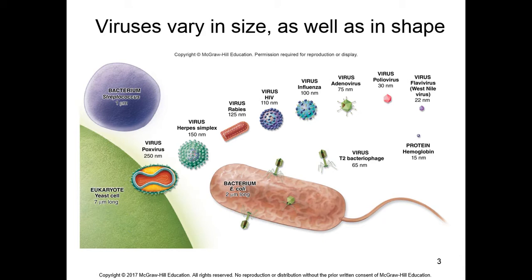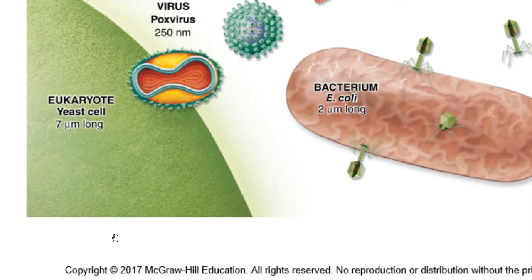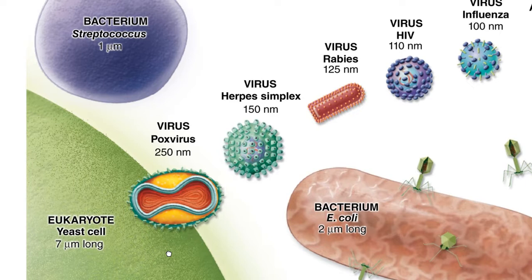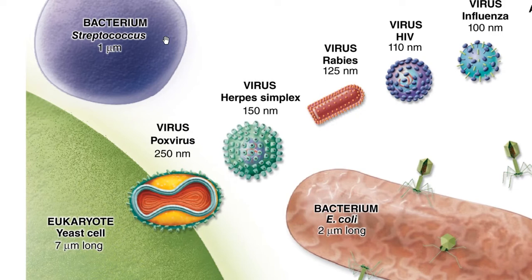If you look at the size of viruses and compare them with different other cells, you can understand how small viruses are. For example, the green eukaryotic cell shown is a monocytic yeast cell approximately 7 micrometers in size. Bacteria such as Streptococcus are approximately 1 micrometer, while E. coli, an example of a rod or coccobacilli bacterium, is approximately 2 micrometers long.